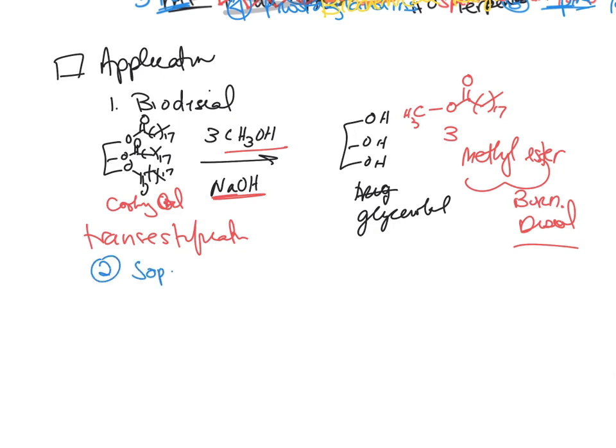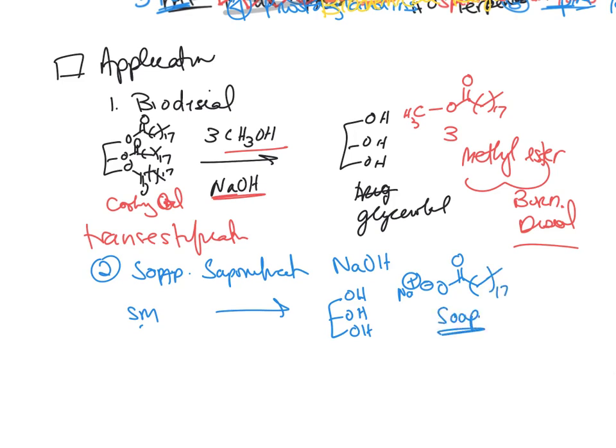Another application is to make soap. We've talked about this saponification. So if you just react that with sodium hydroxide, you're going to make once again glycerol, but you're also going to make the soap. So if you read on your soap, you'll see something that says sodium stearate. Well, that tells you that there's 18 carbons. It's from stearic acid. So that is your soap.